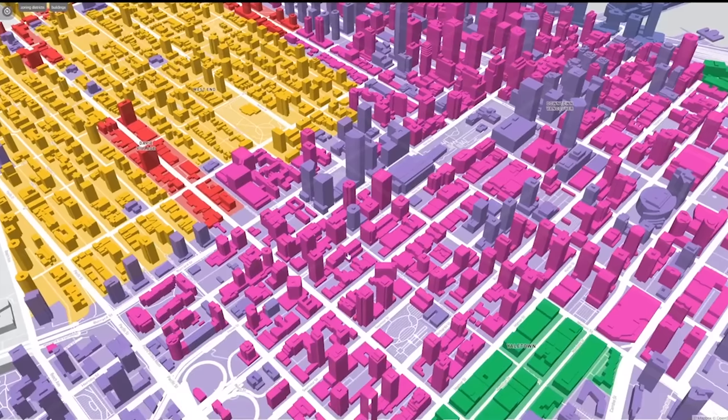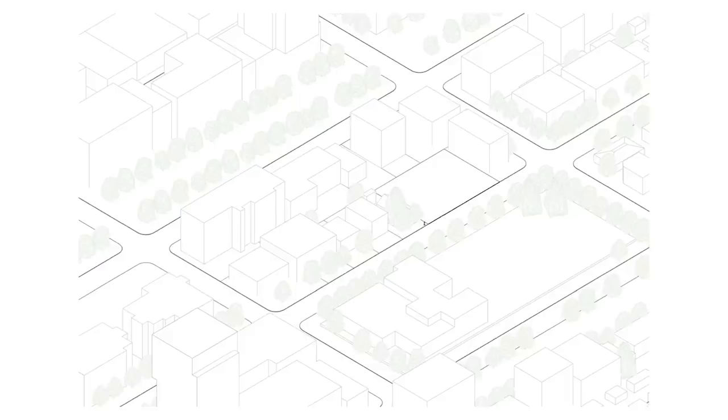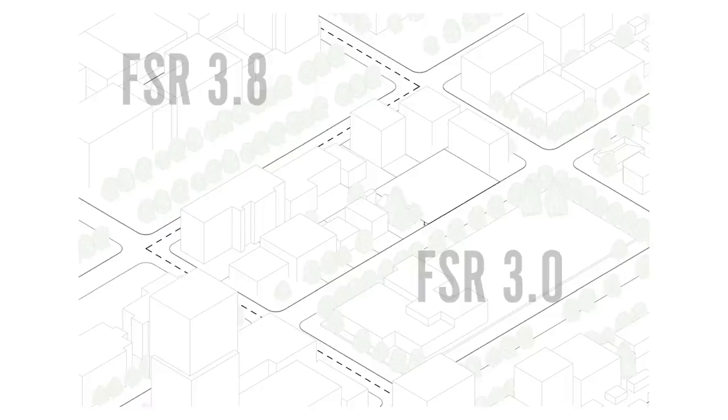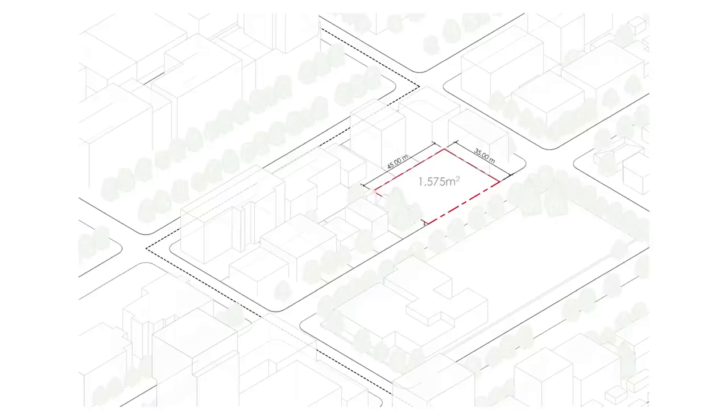Before starting any design, we need to analyze the site to set out the constraints that our designs can respond to. You're going to be looking at all the existing conditions like the neighboring buildings and the topography, as well as potential future conditions. You also want to take a look at the zoning regulations, the maximum buildable area, setbacks, and the FSR. And if you want a detailed breakdown of how we develop a massing model from the zoning requirements, check out the video linked here.